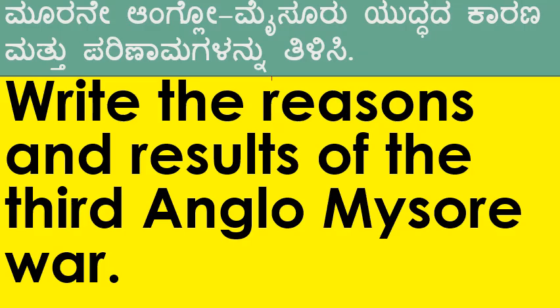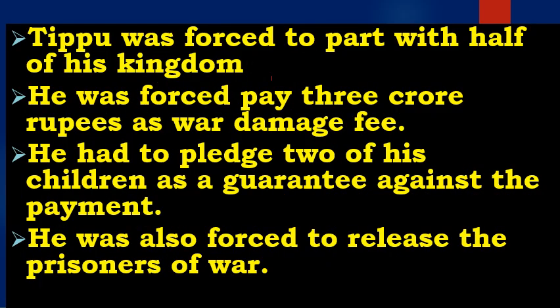Write the reasons and results of the third Anglo-Mysore war. Reasons: Ayakota and Kanganur were handed over to the British by the Raja of Travancore, and the British started building a fort in Pachim, which angered Tipu as these places belonged to him. Results: The war ended with the Treaty of Seringapatam. Tipu was forced to part with half his kingdom, pay 3 crore rupees as war damage fee, and release prisoners of war.